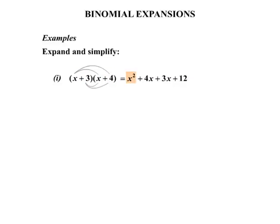So that's the expansion done. Now we need to simplify. x squared there, are there any other x squareds? No, there's not. So let's write that down. Then we have 4x plus 3x, which is plus 7x. And finally we have plus 12 on the end. So our answer there is x squared plus 7x plus 12. Terrific.